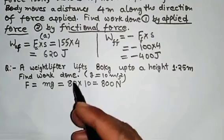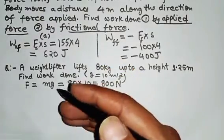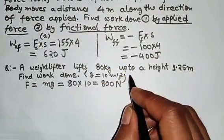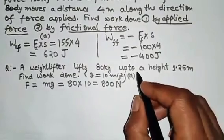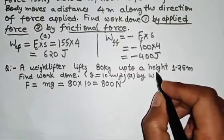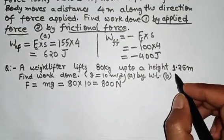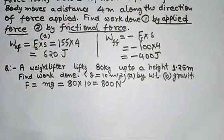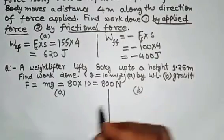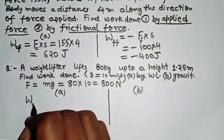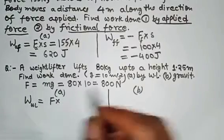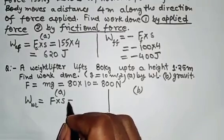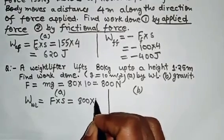I am correcting it here. Suppose your teacher gives this question as: A — work done by the weightlifter, and B — work done by gravitation. Part A: work done by weightlifter equals force applied by weightlifter into displacement. Height here is considered as displacement, so W = 800 × 1.25.